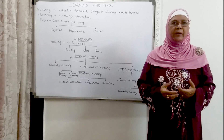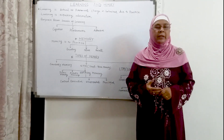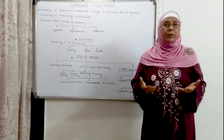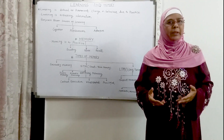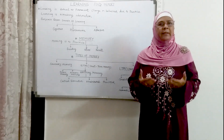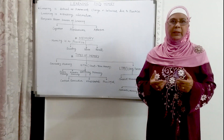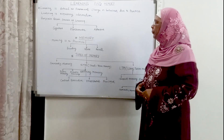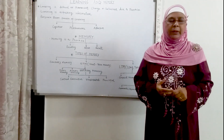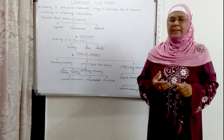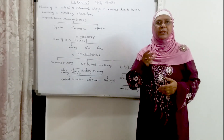What information are we acquiring? It can be any type of information — it can be values, it can be skills, it can be computer learning. Anything which we learn is learning, or acquiring information. According to Benjamin Bloom, in 1965, he says there are three domains of learning.